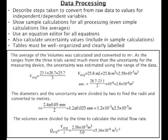The data processing section shows how the raw data was manipulated so that a graph of the independent and dependent variables can be created. This includes determining the uncertainty values of the dependent variables and any other calculations specified. This section should read like a journal, explaining what was done, why, and how. A sample of the calculations carried out is required, using any one of the data points.